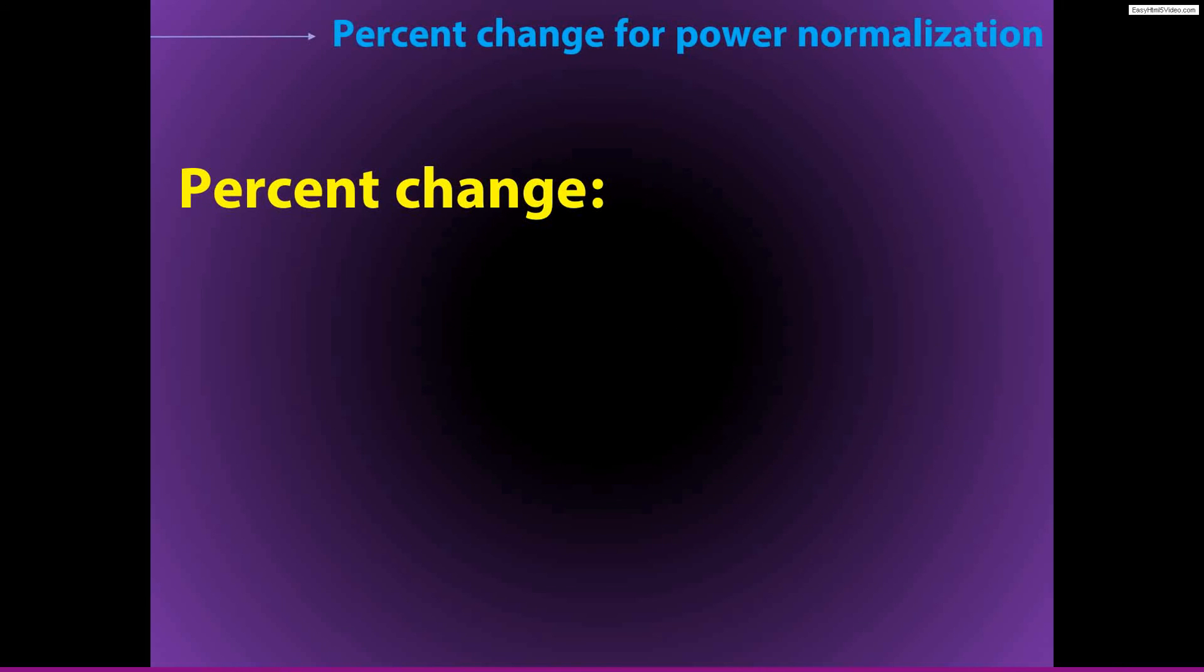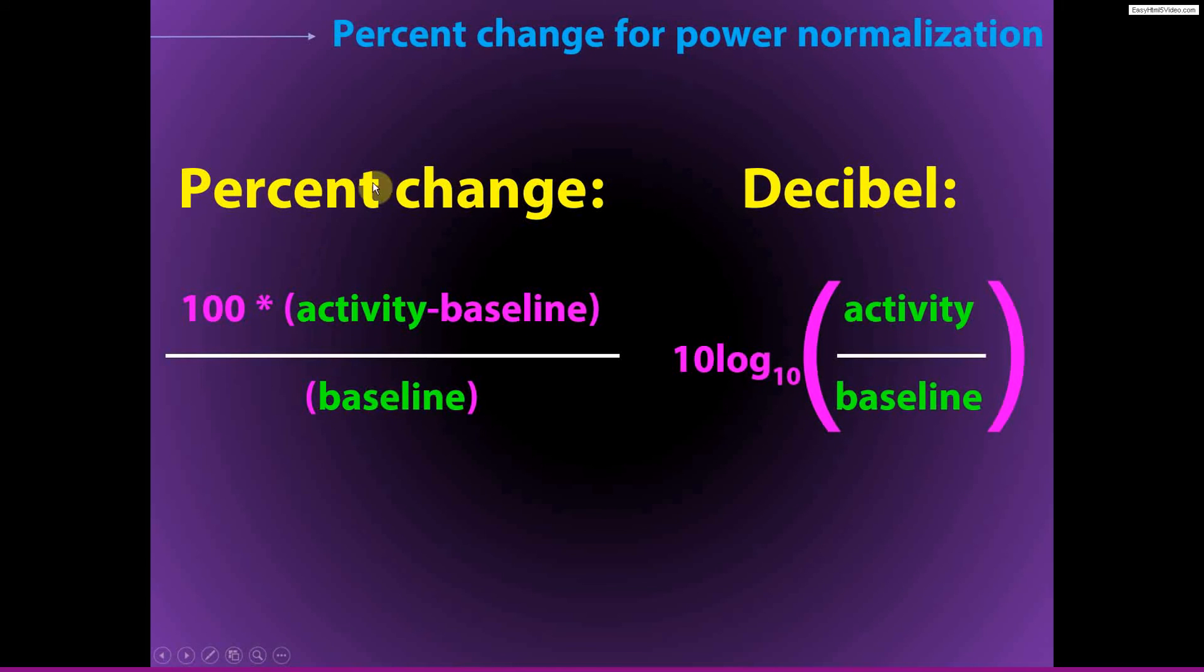So I just mentioned decibel. There's also percent change, which is very similar. The formula for percent change is to subtract the activity minus the baseline, divide it by the baseline period, and then multiply it by 100. You can see the important thing here is, again, that we are dividing by the baseline activity. In that sense, computing percent change is very similar to computing the decibel. You can see I've highlighted here in both of these formulations, the important part is that we divide the amount of activity during the task period by the level of activity in the same frequency band during the baseline period. That's really the most important component of these normalization procedures. All this other stuff, percent change and decibel, these do actually differ a bit, as I'll show. But really, the important thing is dividing the activity by the baseline.